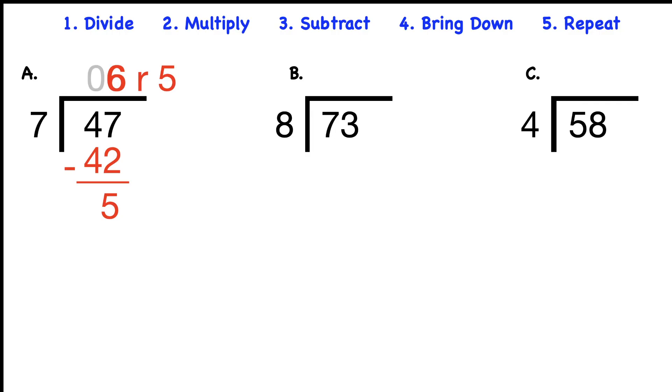Problem B: 73 divided by eight. Eight goes into seven zero times, but it does go into 73 nine times because nine times eight is 72. When we subtract, we get nine with a remainder of one.